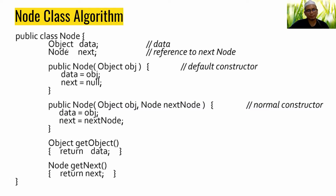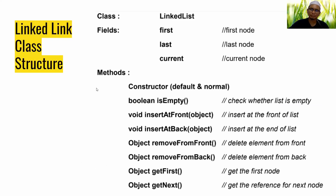The Node class has two data members: data, defined as type Object, and next, defined as type Node. This class will be implemented by the LinkedList class, which will utilize the Node class.